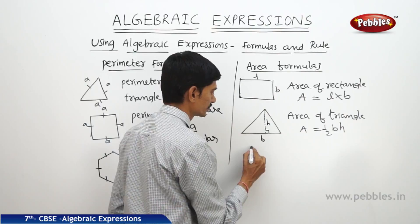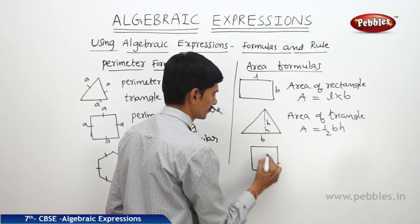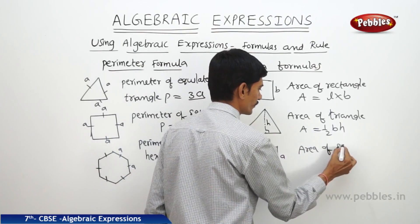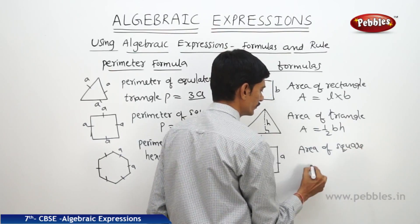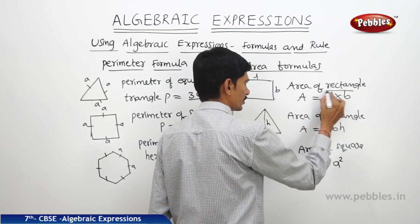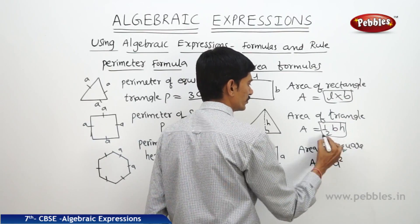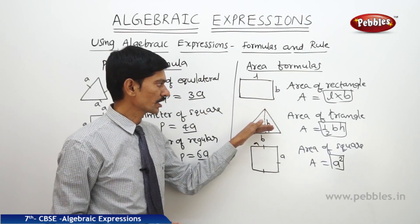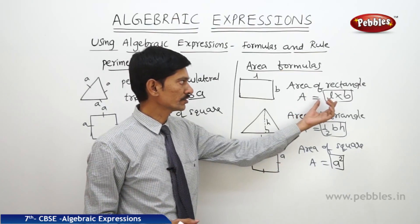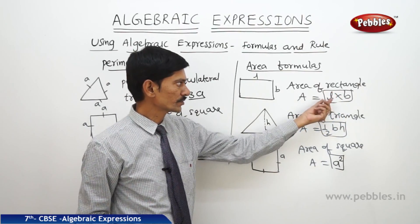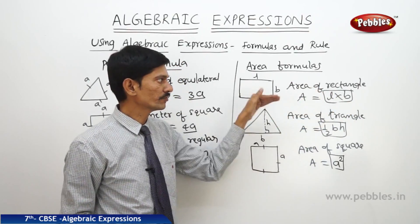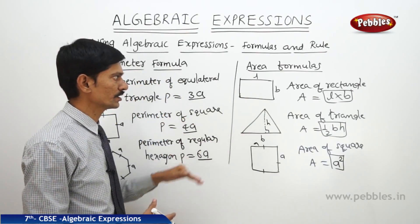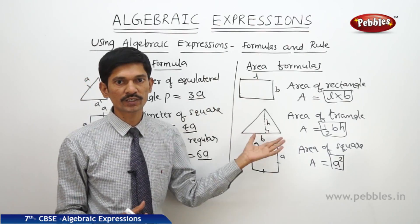Then what is the area of a square whose side is A units? The area of a square is A equals A squared. So these are all algebraic expressions. Using these algebraic expressions, we can find the area of a rectangle, triangle, or square depending on the values of the variables present. If we substitute the values of L, B, or other variables, we will get the areas of different figures.